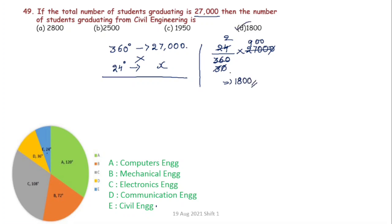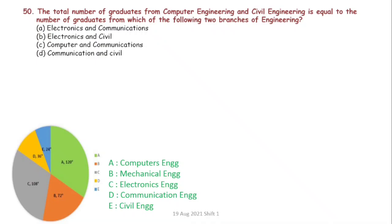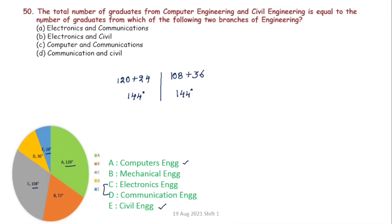Next question: the total number of graduates from Computer Engineering and Civil Engineering combined. Computer Engineering is 120 degrees and Civil is 24 degrees — total 144 degrees. This equals which other two branches? Electronics Communication (C) is 108 degrees, and D is 36 degrees; 108 plus 36 equals 144 degrees. So the answer is option A.